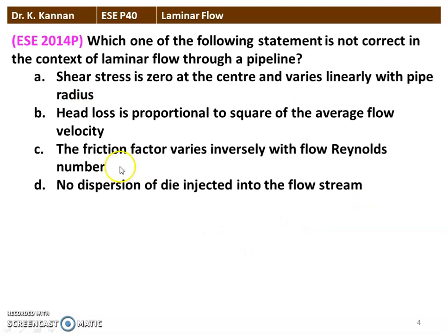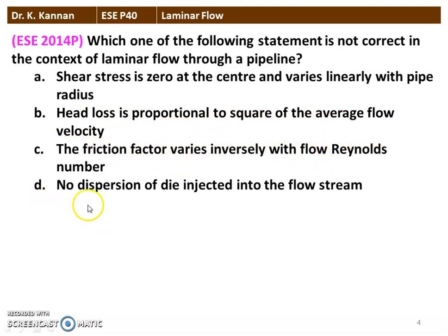The next question from the 2014 question paper: which of the following statements is NOT correct in the context of laminar flow through a pipeline? The options are: shear stress is zero at the center and varies linearly with the pipe radius (this is correct); head loss is proportional to the square of the average flow velocity; friction factor varies inversely with the Reynolds number (this is correct); no dispersion of dye injected into the flow stream. The correct answer is that head loss proportional to the square of the average flow velocity is the wrong statement.